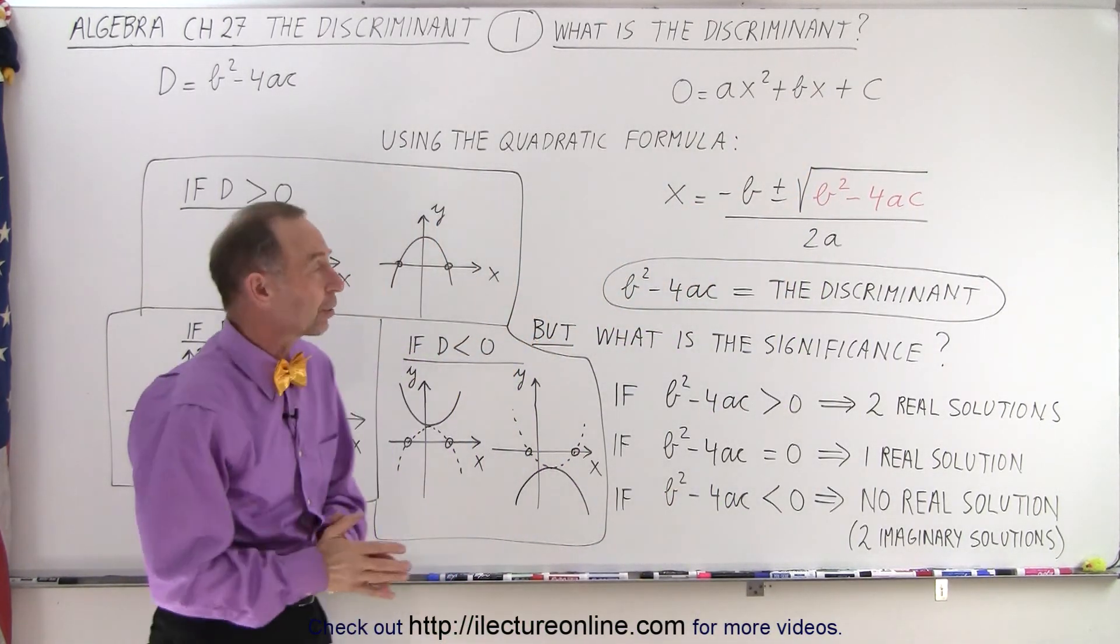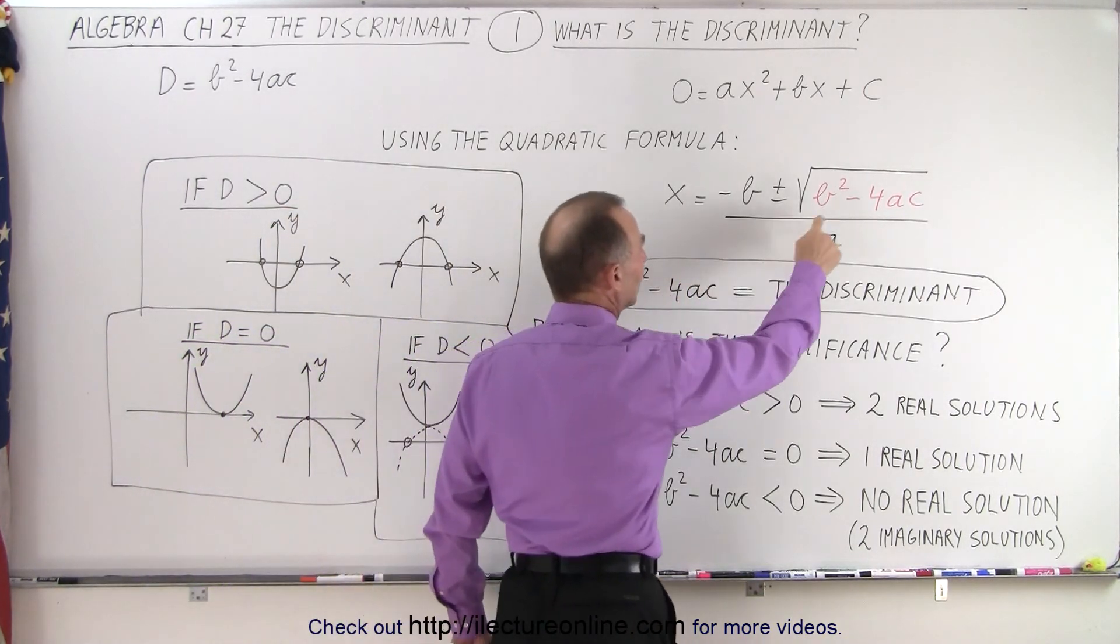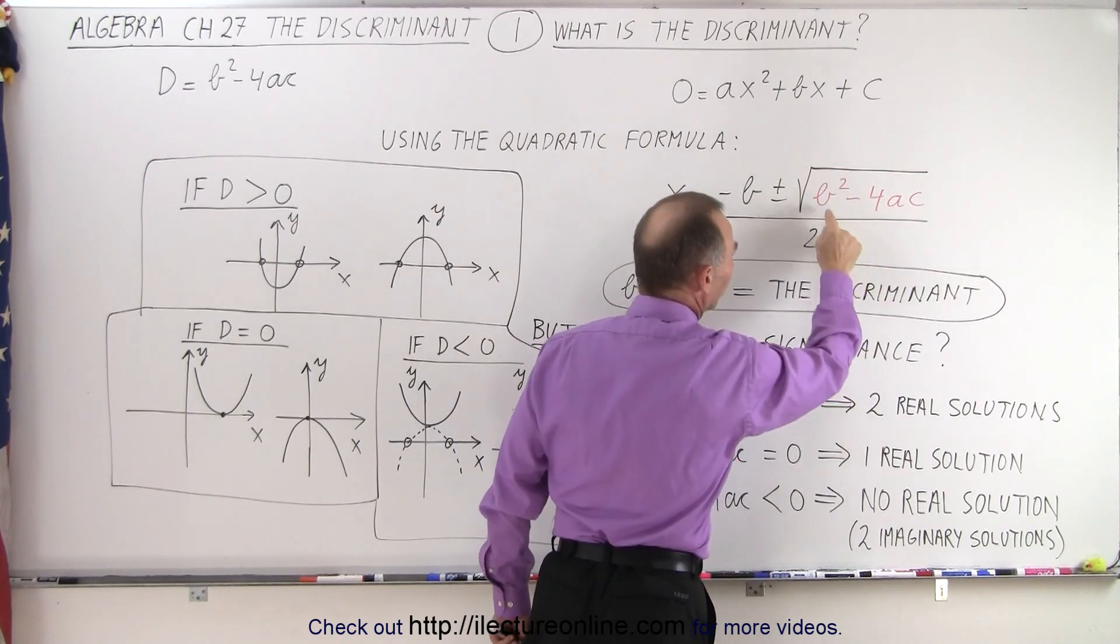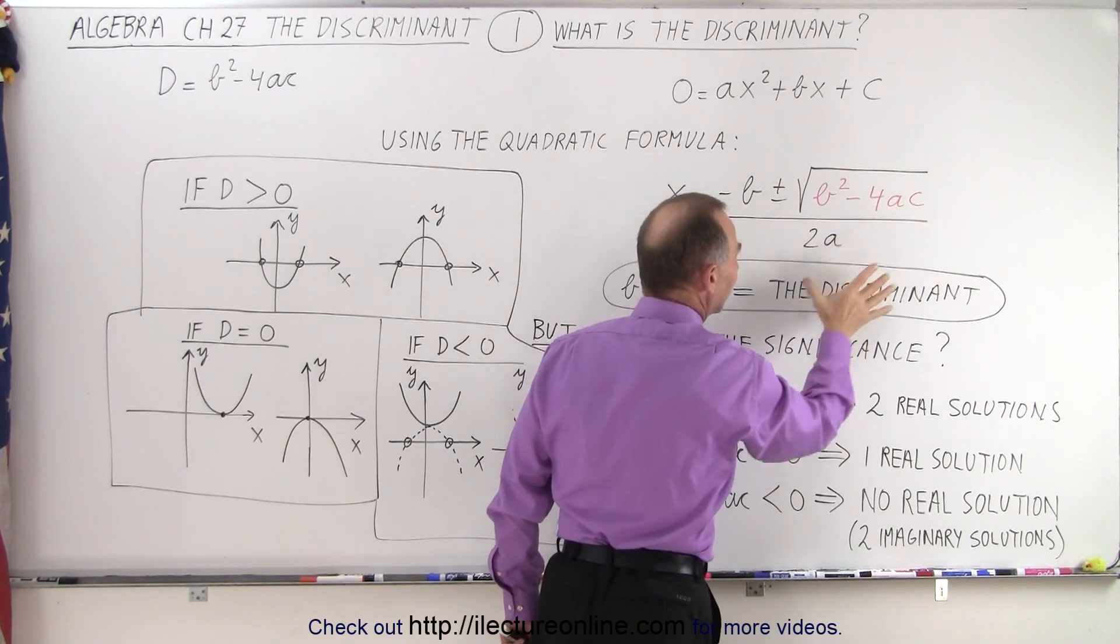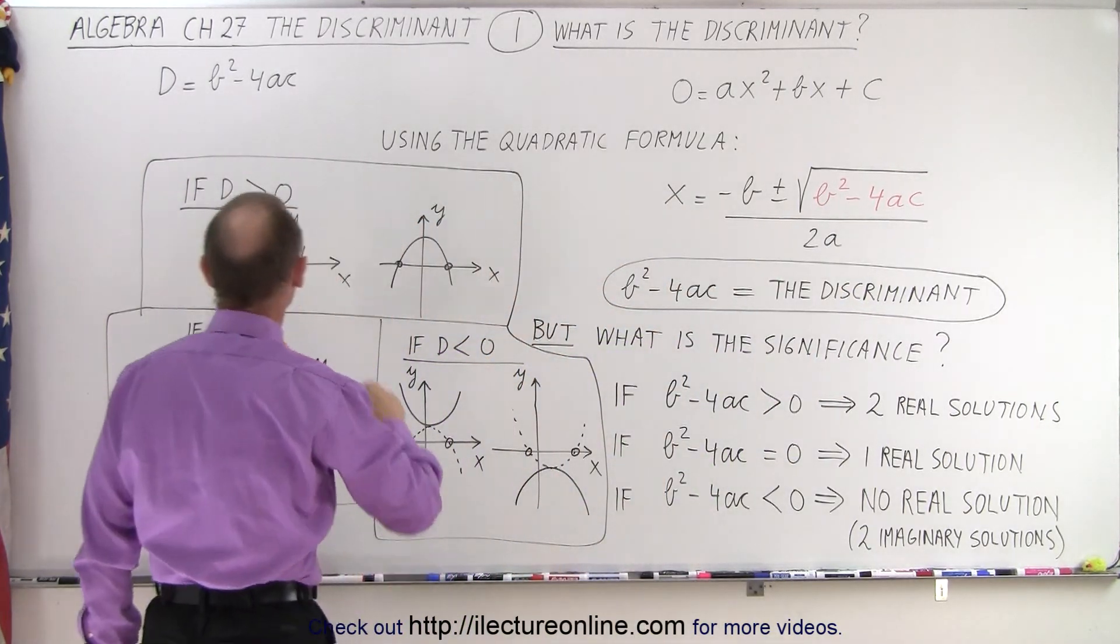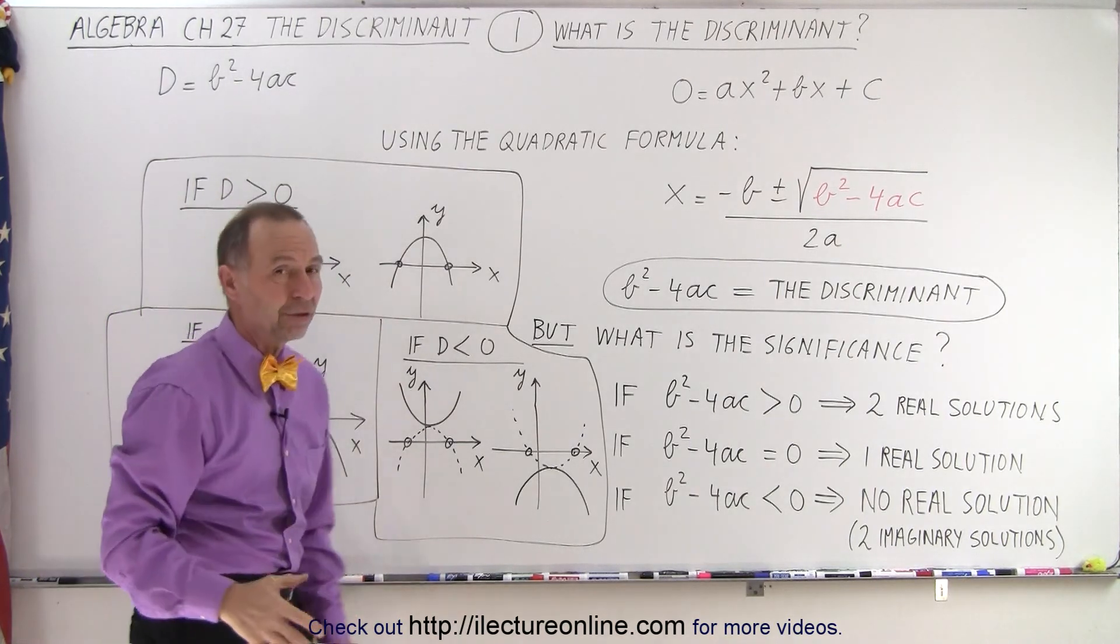And now to solve for that quadratic equation we use the quadratic formula which is right here. Now notice the portion that's underneath the radical, b² - 4ac. Well that is called the discriminant, and sometimes we use the letter D to indicate the discriminant, b² - 4ac.